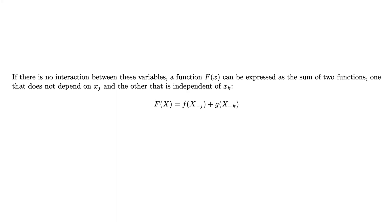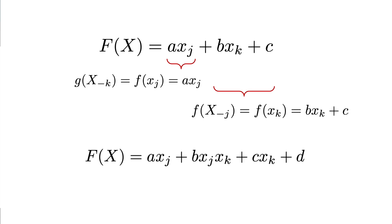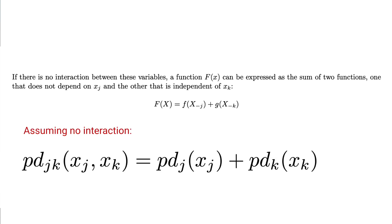It follows from this mathematical theorem: if there's no interaction between variables, a function f of x can be expressed as the sum of two functions — one that is independent of xj and the other that is independent of xk, where capital X minus J and capital X minus K represent all variables except xj and xk respectively. It is easy to show this theorem is valid for linear regression: we can break up the linear equation into two functions. But if xj and xk do interact, we would have to include an interaction term. The theorem applies not only to prediction functions but to any function of features, such as a PD. We can center our PDs to get rid of any pesky constants.